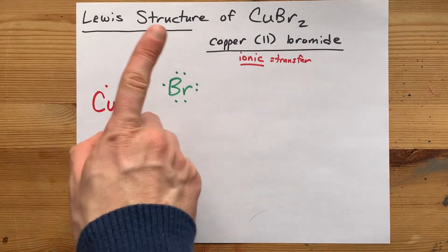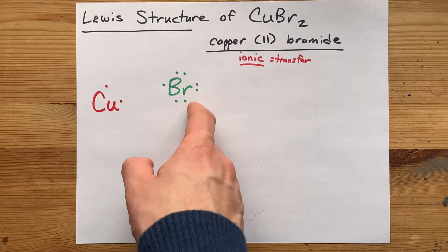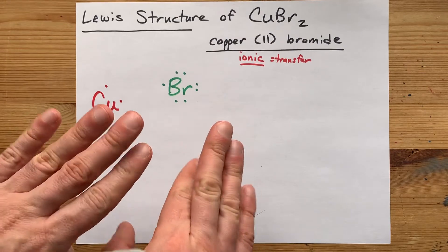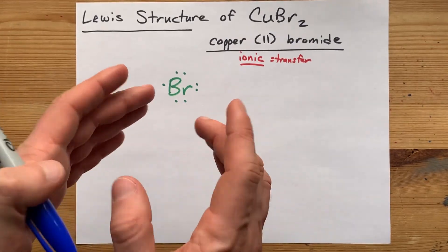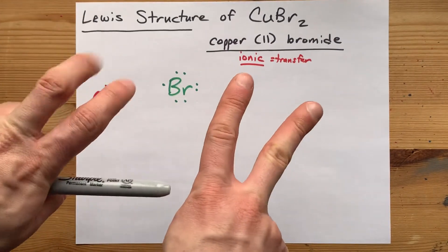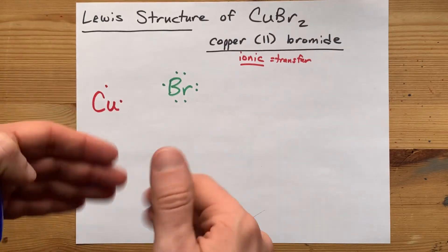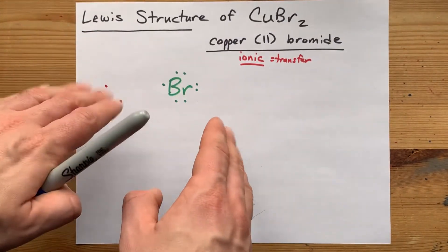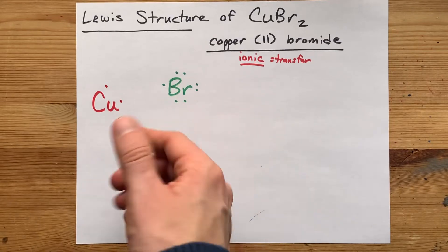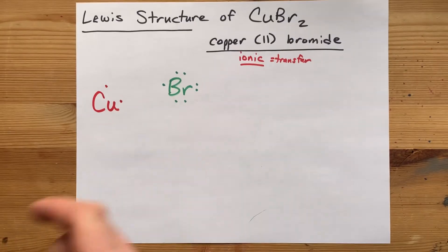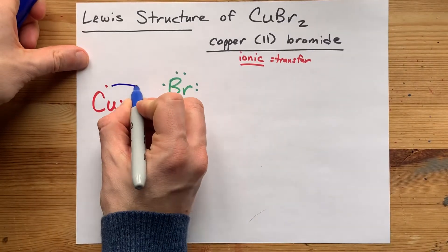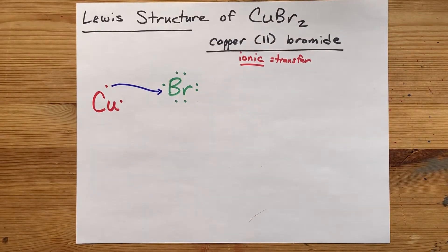What happens is the metal donates its electrons to the non-metals, and the non-metals are trying to get 8 valence electrons total. That's the octet rule, the fact that 8 valence electrons makes it stable. So bromine bringing 7 only needs one more electron to complete its octet. One of copper's electrons donates itself to the cause.